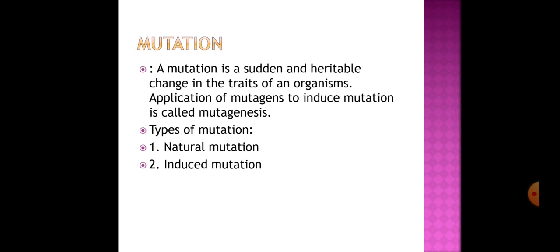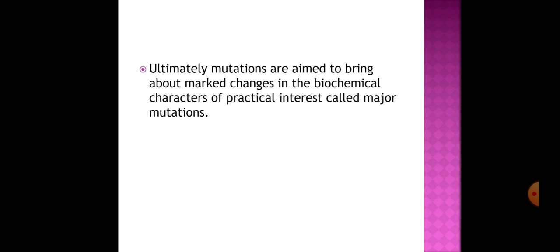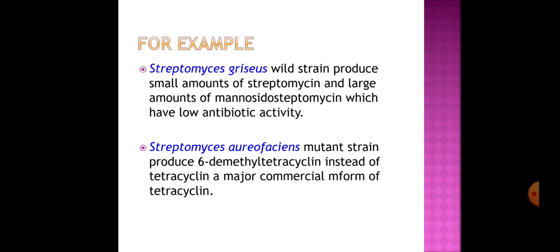The next strain improvement technique is mutation. Mutations are sudden and heritable changes in the traits of an organism; application of mutagens to induce mutations is known as mutagenesis. Mutations can be natural or induced, and ultimately are aimed to bring about marked changes in biochemical characteristics of practical interest. For example, Streptomyces griseus wild strain produces small amounts of streptomycin and large amounts of mannosidostreptomycin, which has low antibiotic activity; a mutation can make the new strain produce more streptomycin and less mannosidostreptomycin. Another example is Streptomyces aureofaciens, where a mutant strain produces 6-demethyltetracycline instead of tetracycline, which is a major commercial form of tetracycline.